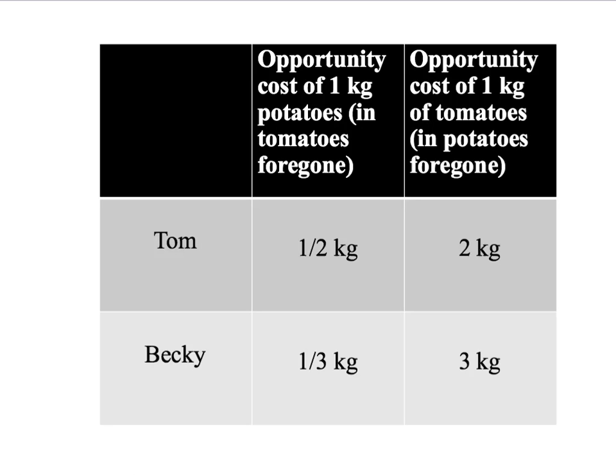Remember that the opportunity cost of an activity is the best alternative forgone when you carry out that activity. Continuing our earlier example, Tom had an opportunity cost of producing potatoes of half a kilogram of tomatoes forgone. In other words, whenever he produced a kilogram of potatoes, he used time in which he could have produced half a kilogram of tomatoes. Remember also that Tom's opportunity cost of potatoes is simply the inverse of his opportunity cost of tomatoes, and vice versa.